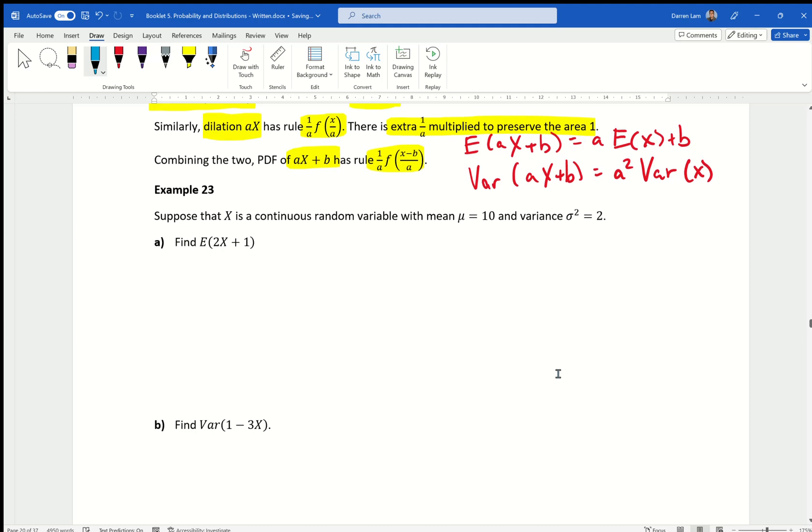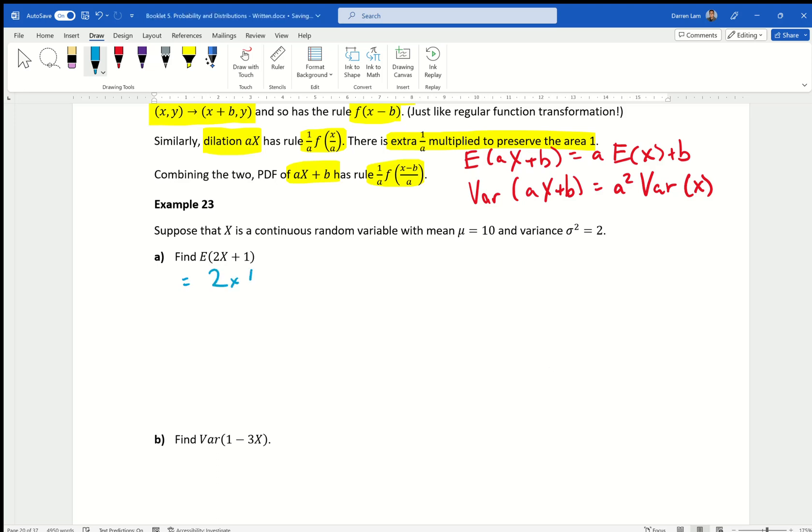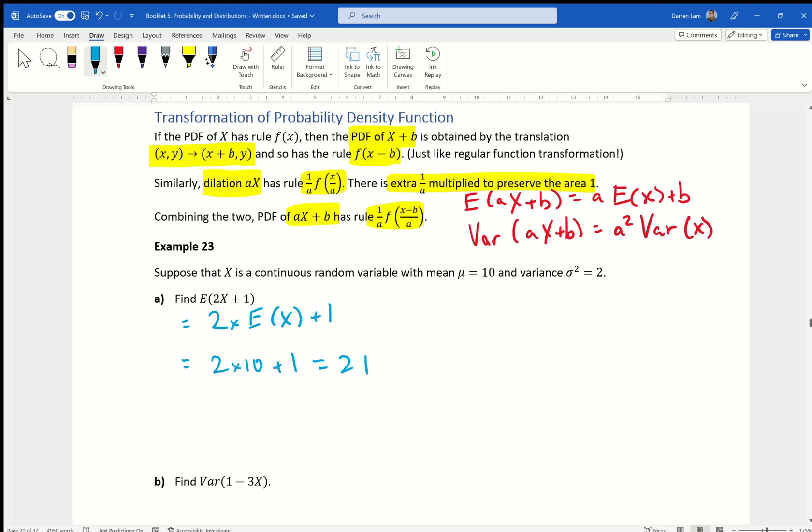Suppose that x is a continuous random variable with a mean of 10 and a variance of sigma squared equals to 2. Find E of 2x plus 1. Using that, of course, I know that it's going to equal to 2 times E of x plus 1. That's just using the first formula row in the top right. Which equals to 2 times 10 plus 1, which is 21. Any questions? When you took out the 2, using this formula. Yep. All right, let's move on.